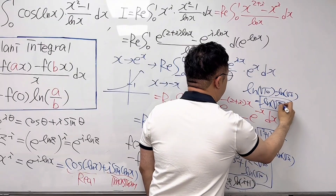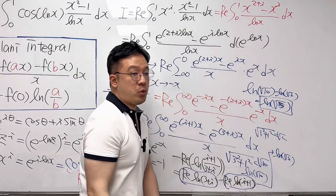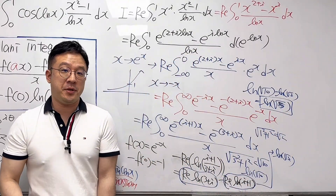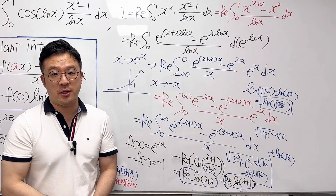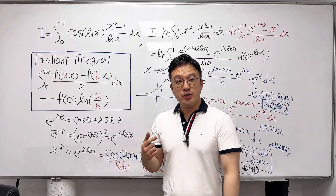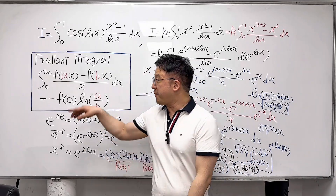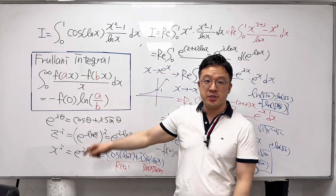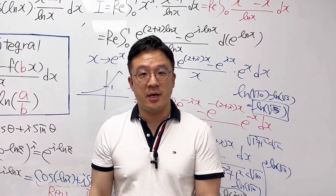So ln(√5) is the answer for this question. Pretty interesting integral using Frullani integration — how exciting!